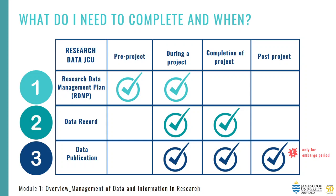This slide gives a good indication as to when you should be completing each record in Research Data JCU. A research data management plan is ideally to be completed pre-project. For HDR candidates, you are required to have your RDMP completed and reviewed by your primary advisor before your confirmation of candidature. As you progress, the RDMP is maintained and updated to reflect changes as they occur — it is a living document. A data record can be completed throughout your project, for example when completing thesis chapters, or at the end of your project. A data publication closely follows a data record, with the option either during or at the end of the project. You also have the option to choose an embargo period to delay the release of your data.